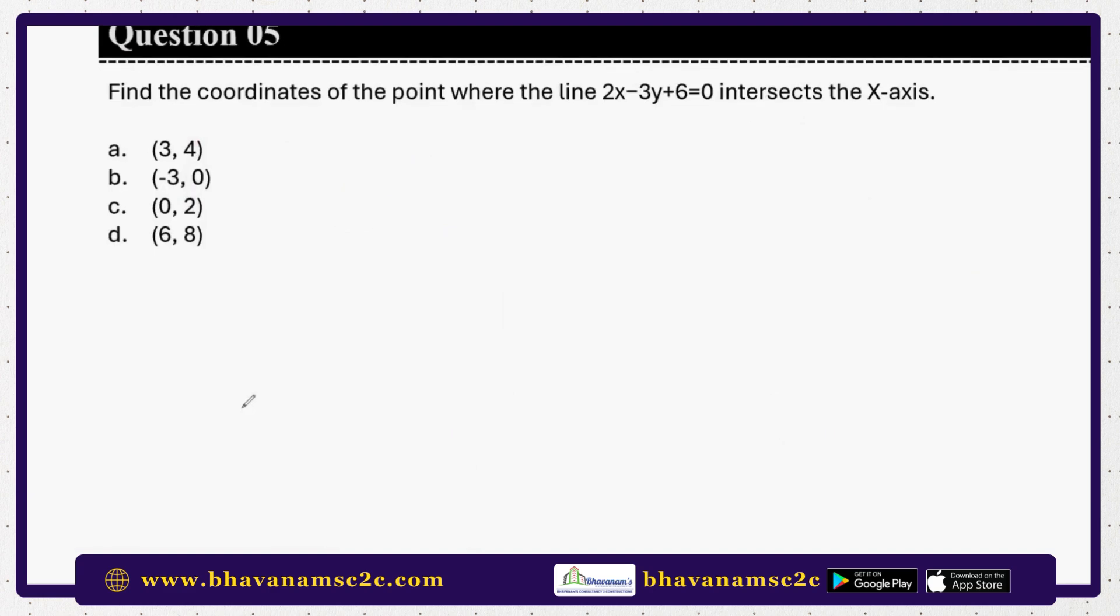Find the coordinates of the point where the line 2x minus 3y plus 6 equal to 0 intersects the x-axis. You have to say the answer within 2 to 3 seconds. When it intersects the x-axis, the y value is 0. Check the options. Y value is 0: minus 3 and 0. In that case, blindly, you don't have to solve anything else. That is the only option.